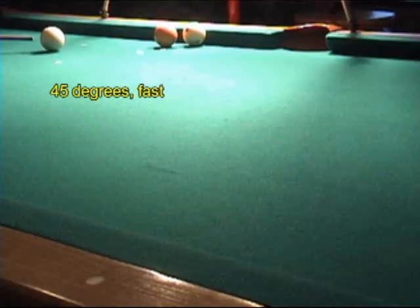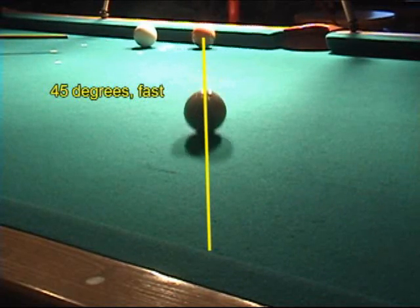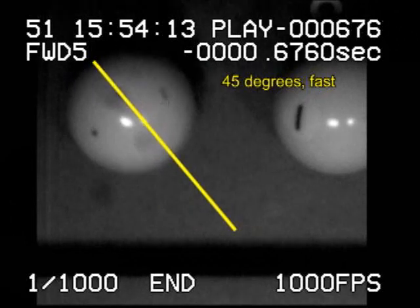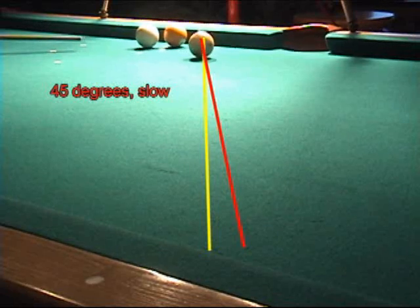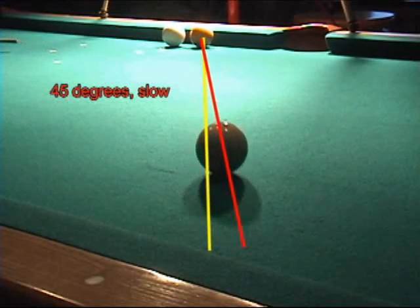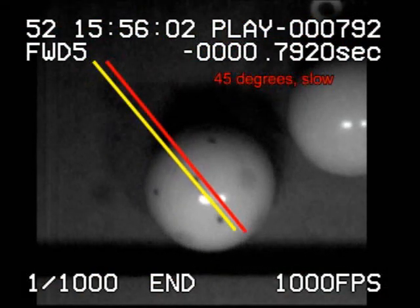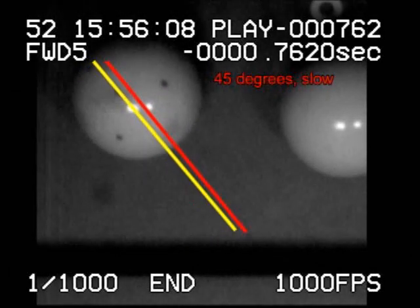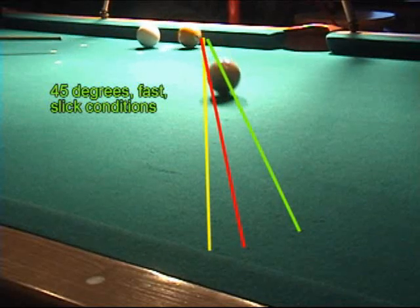Now we're shooting the four shots from 45 degrees. Again, with slick conditions, the ball rebounds longer.